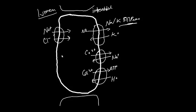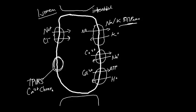We also have a channel called the TRPV5 calcium channel. What this does is allow calcium to move from the lumen into the cell. We're using ATP to actively drive calcium into the interstitial space, which creates a low-calcium concentration inside the cell, and then the TRPV5 channel brings calcium from the lumen into the cell so we don't lose it.